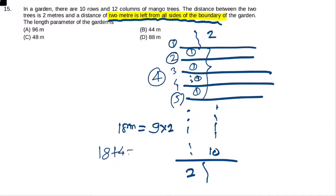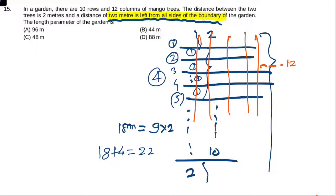Similarly, if we see column-wise, total columns are 12. So the number of spaces will be 11, and every space is 2 meters.